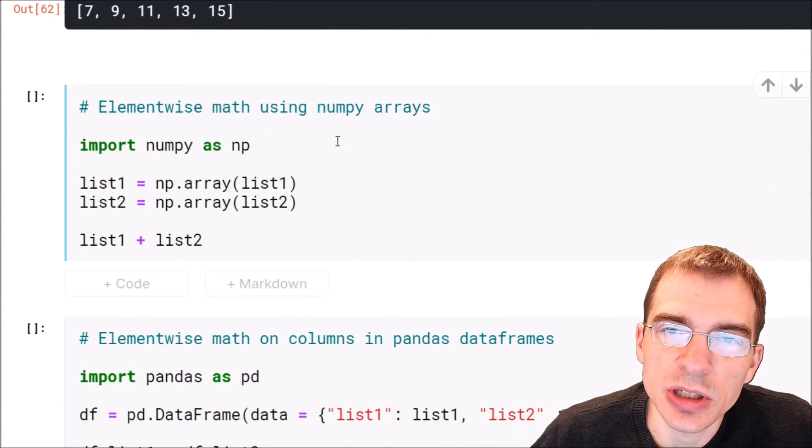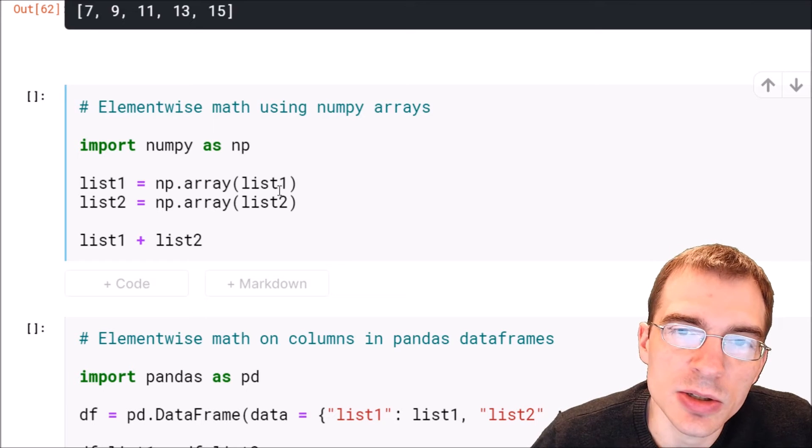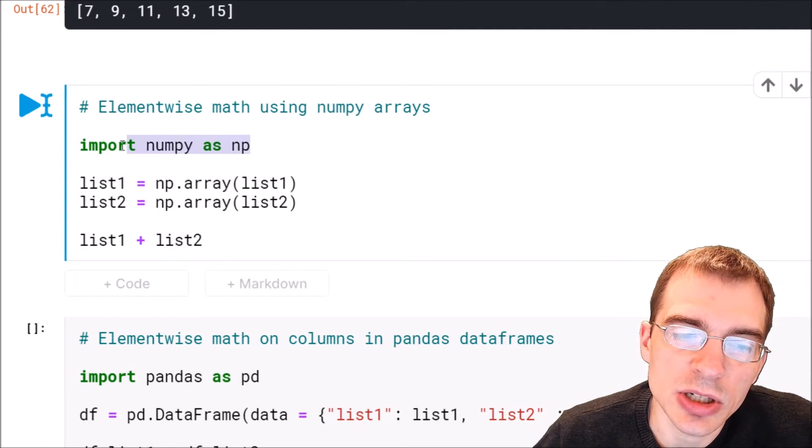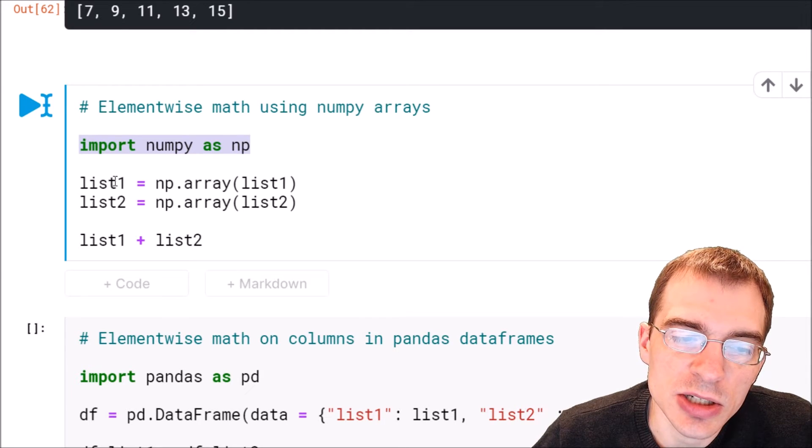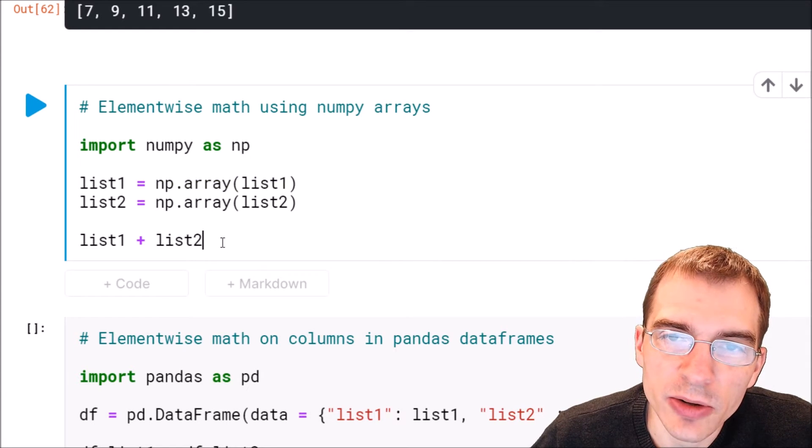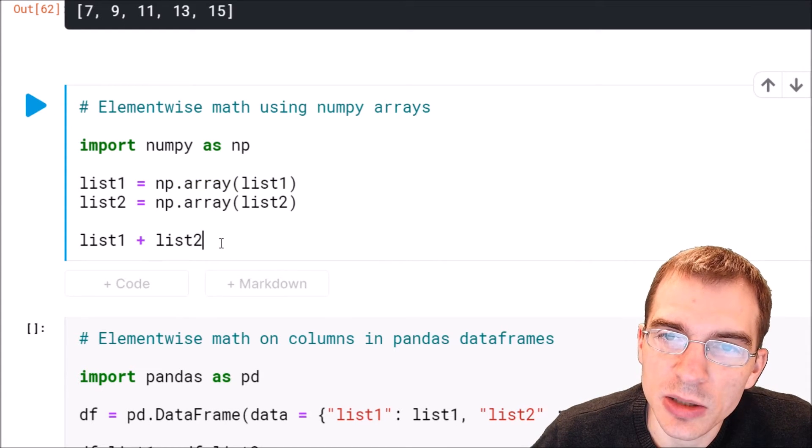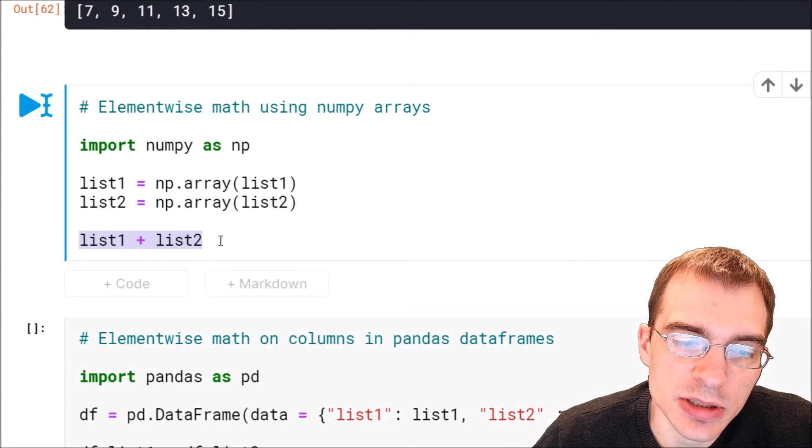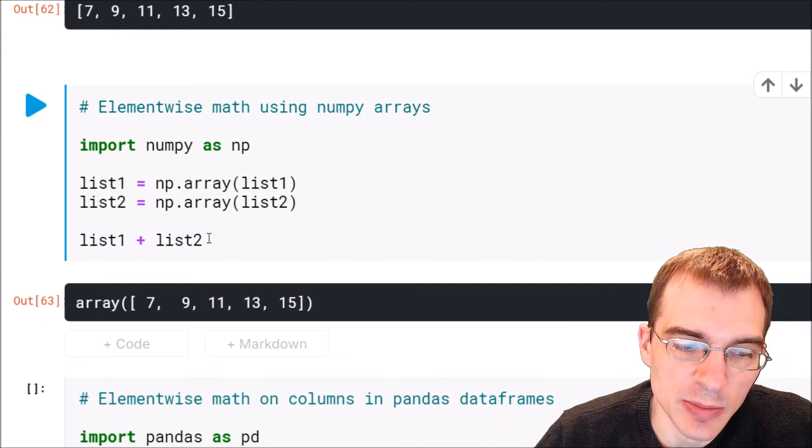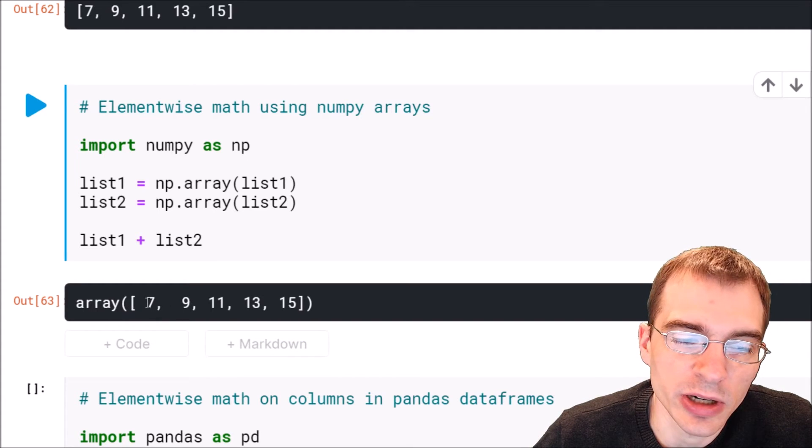Instead of using base Python lists, if we wanted to use NumPy arrays to do this, we could just import NumPy and then turn our two lists into NumPy arrays. So we're changing list one into a NumPy array and list two. Once they're NumPy arrays, arrays will perform this element-wise math by default. We just add the two arrays—list one plus list two. That will perform the same operation, and we see we have an array with the same result.